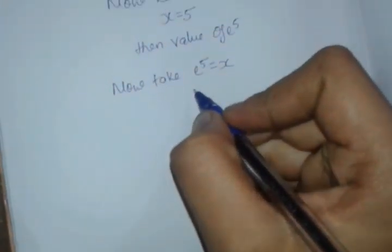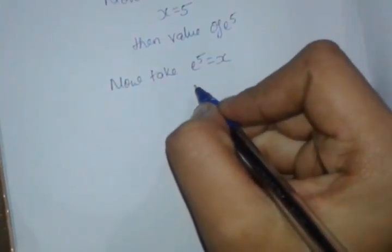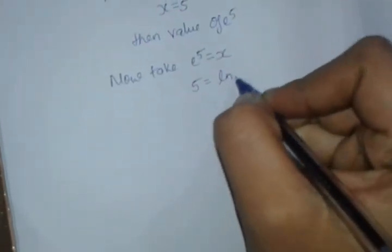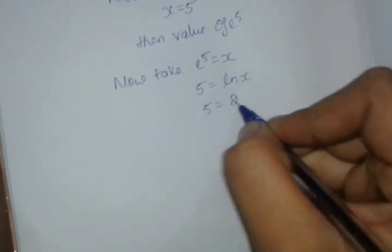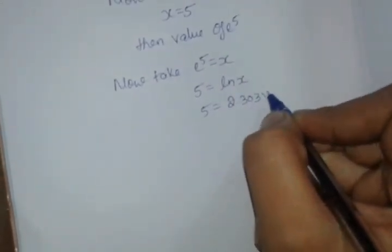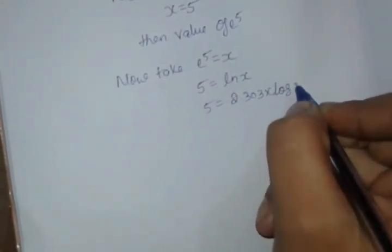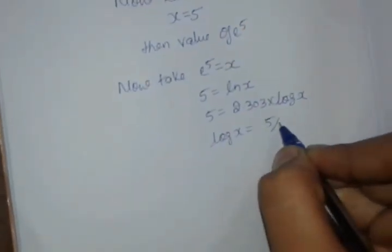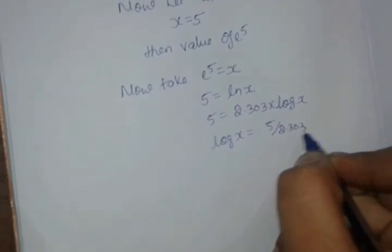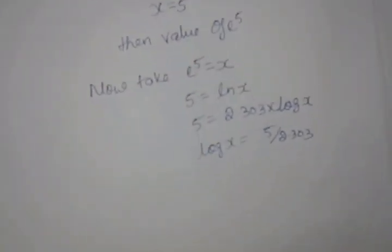Then 5 is equal to ln into x. 5 is equal to 2.303 into log x. So log x is equal to 5 by 2.303. Now let us calculate the value.